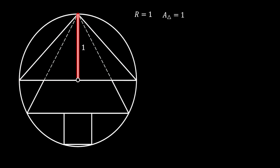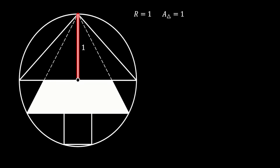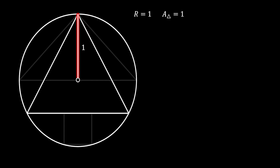Now we're going to save those two values for later. And we're going to check the middle section of our Christmas tree, which is actually represented by this green trapezium. But in order to find the area of this trapezium, we first need to take a look at our equilateral triangle.